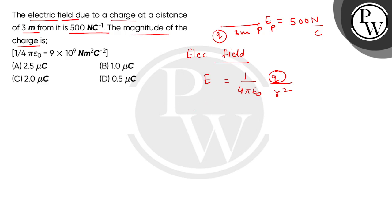तो बच्चों values put कर देंगे, E की value है 500. 1 by 4 pi epsilon naught constant की value है air में 9 multiplied by 10 to the power 9 multiplied by Q and divided by 3 square. क्यूंकि R की value 3 है, तो 3 square हो जाएगा 9.